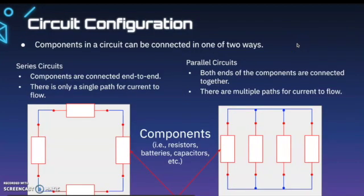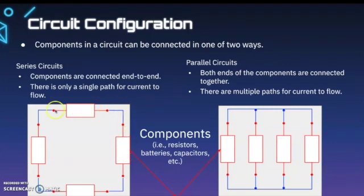Let's take a look at some circuit configurations. Components in a circuit can be connected in one of two ways: either as a series circuit or a parallel circuit. In a series circuit, components are connected end to end, and there is only a single path for current to flow. In a parallel circuit, both ends of the components are connected together, and there are multiple paths for the current to flow. A series circuit is a series of components one after the other, just like books or movies. In parallel circuits, we often see the components lined up parallel to each other and then connected on both sides.